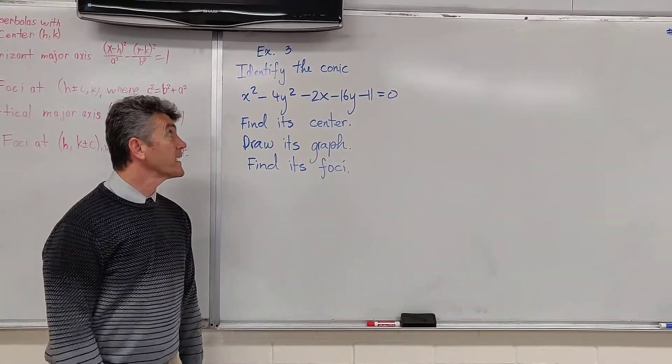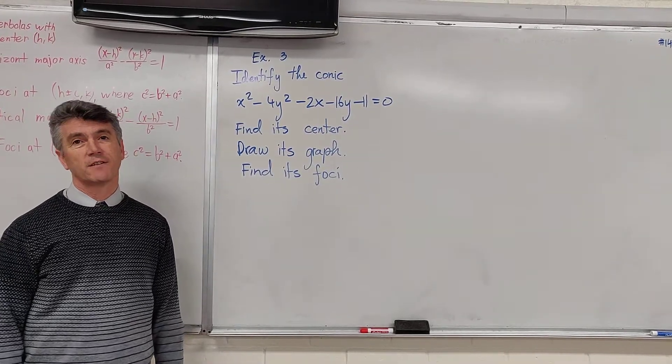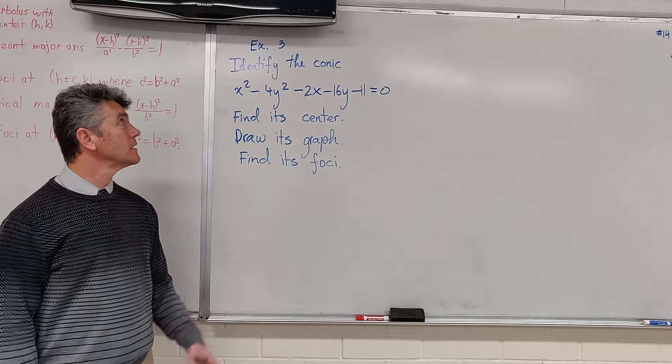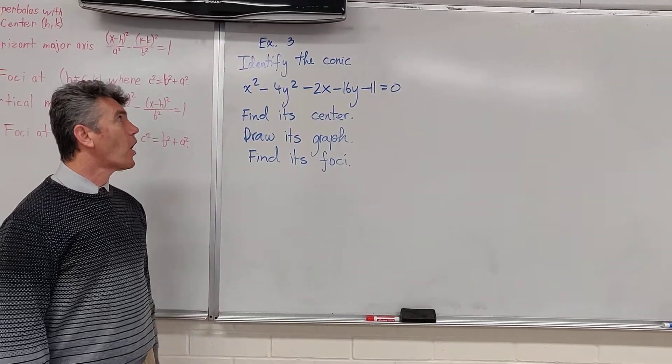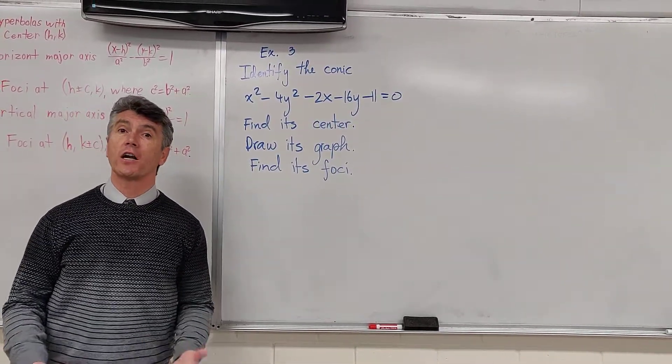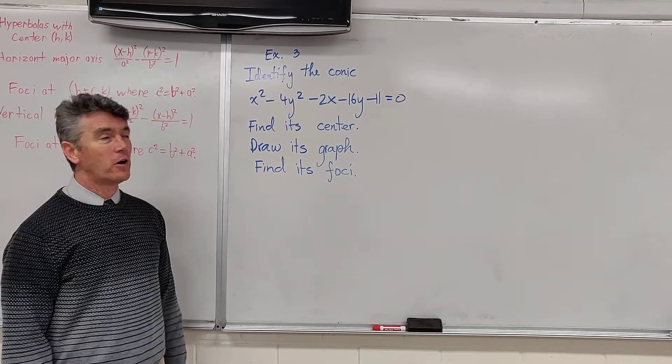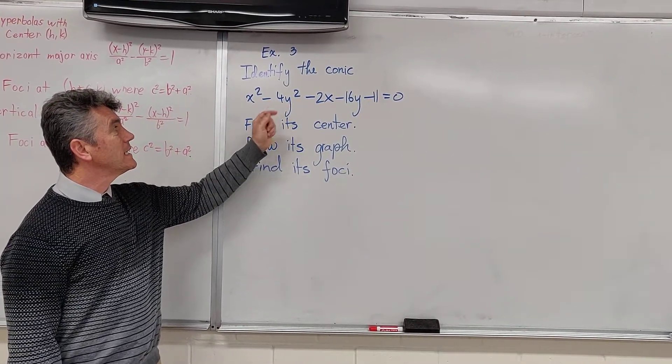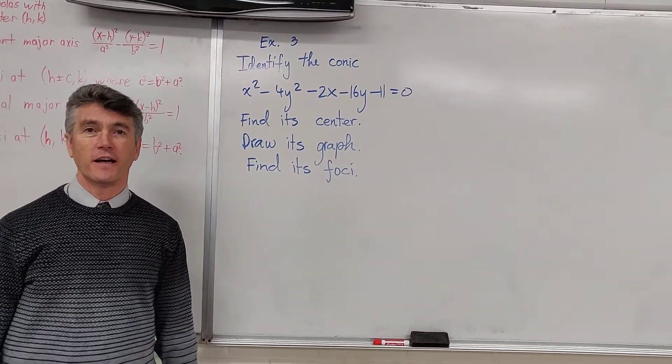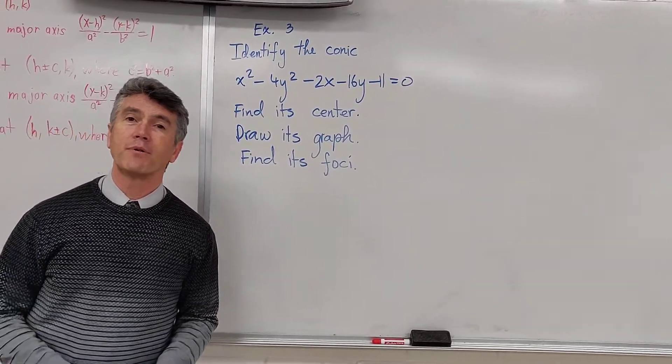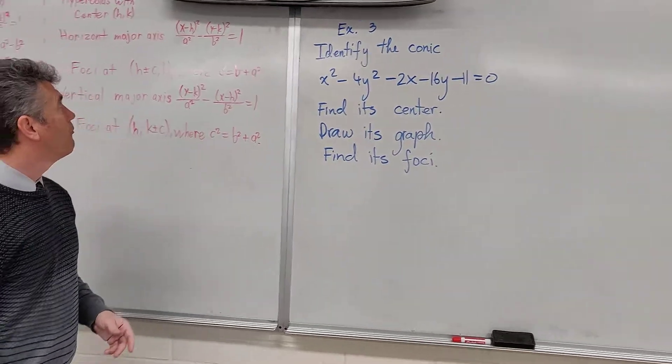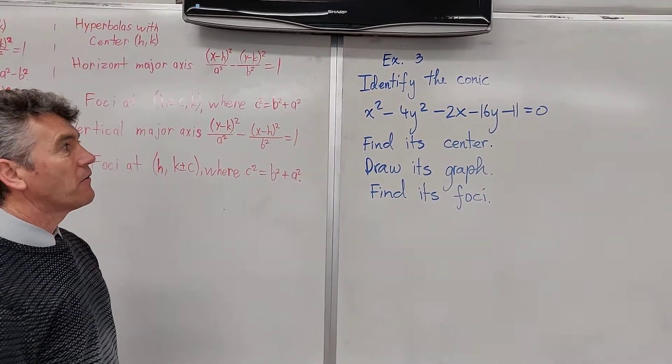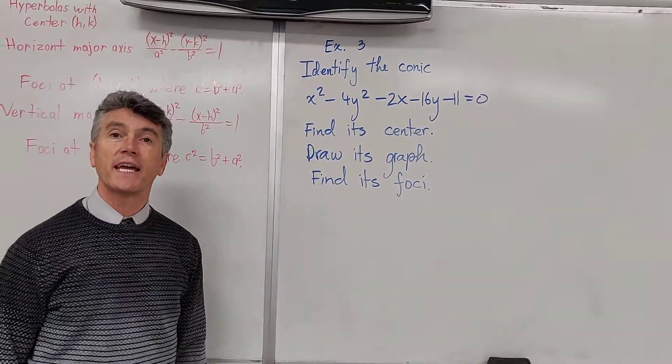In this example, we'll write an equation in two variables as given to us, and we're asked to do quite a few things, which is identify the conic. I can identify the conic right now without doing any work. How can I do that? Well, because it says x squared minus 4y squared. Remember, for hyperbolas, we have minuses. So I already know my conic. I'm going to deal with a hyperbola.